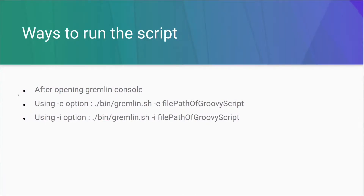There are three ways using which we can run a Groovy script in the Gremlin console. The first one is after opening the Gremlin console, copy the script and just paste it on the console. Secondly, using the hyphen-e option. Thirdly, using the hyphen-i option.